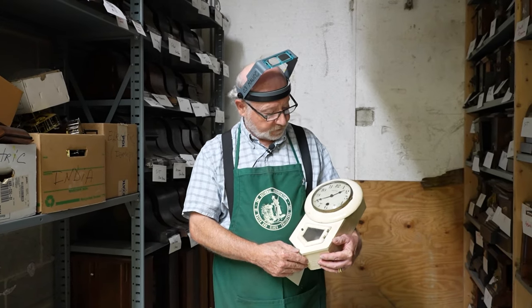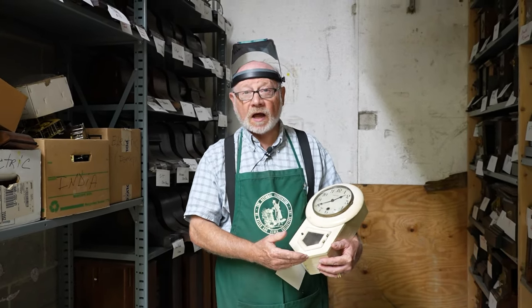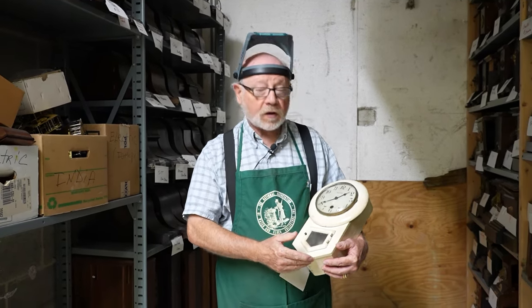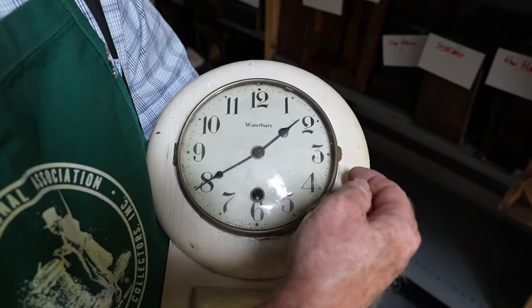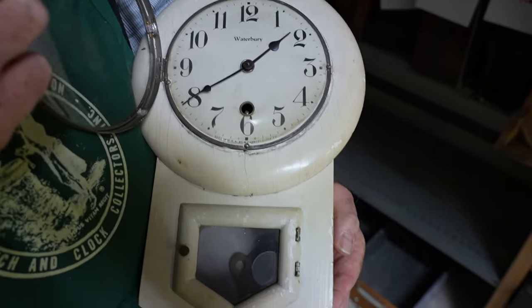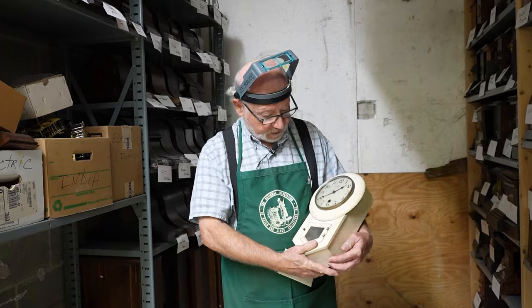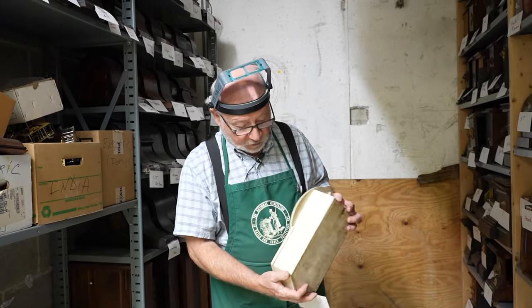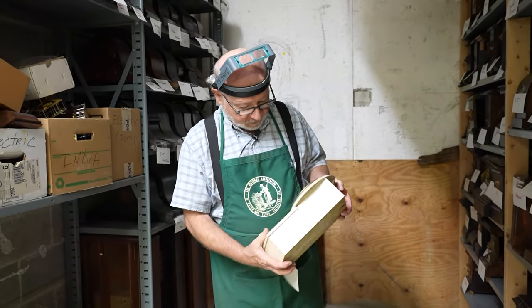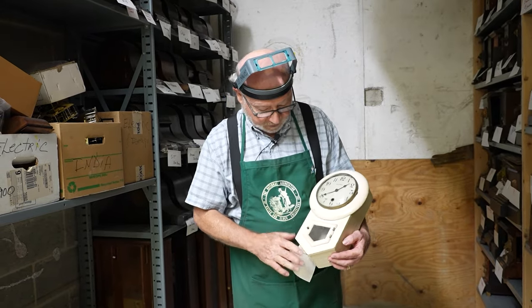So this is the clock we're going to perform a general movement servicing to. It's a time only clock. It only has one winding arbor. All it does is keep time. It's a wall clock and it's made by the Waterbury Company out of Connecticut. We'll take a look in the catalog to see if we can try to date this. Somebody went and painted this white. I'm not sure what color it would have been originally, but it looks like it's been repainted and you can see paint peeling off.